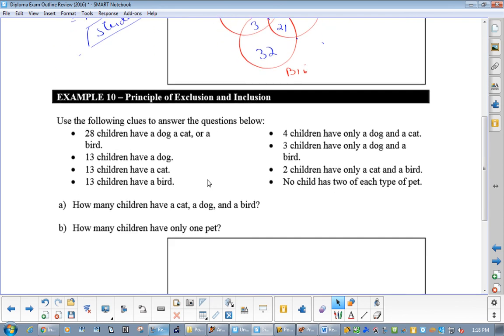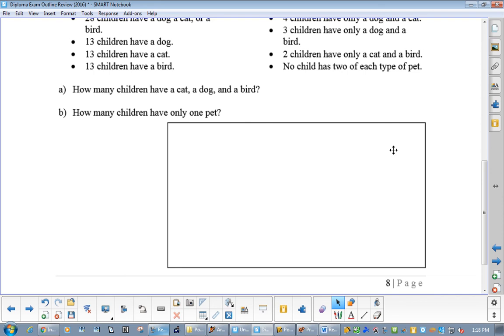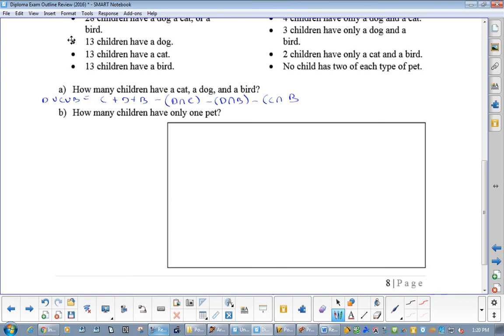And then, the last one we did was the one where you have to figure out the very center. And the formula, we did that. Now, they will give you this, hopefully. But you have a quiz tomorrow. So, dog or cat or bird equals cat plus dog plus bird minus dog and cat minus dog and bird minus cat and bird plus dog and cat and bird.